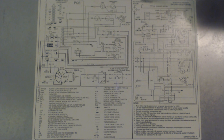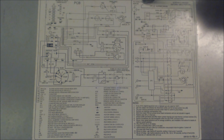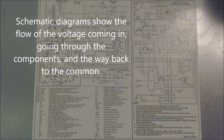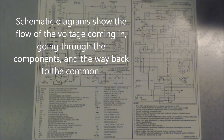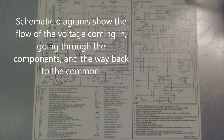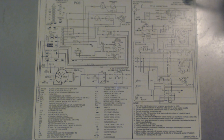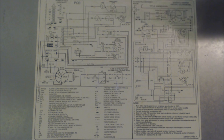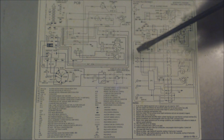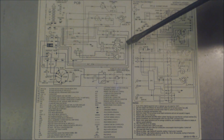It starts at the top left here at L1 and L2 — L1 being hot, L2 being common neutral. This is a 120-volt or 115-volt furnace. It says schematic diagram, natural gas and propane. So the connection diagram is going to help you locate components.